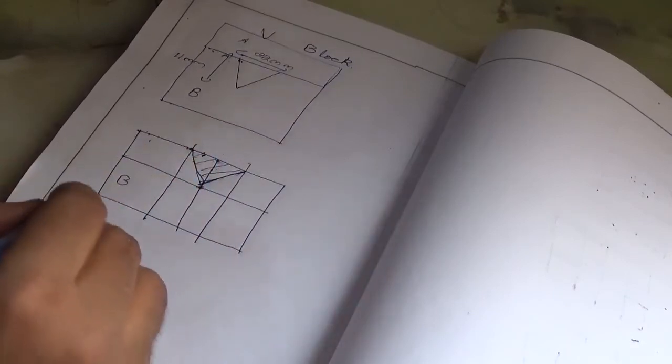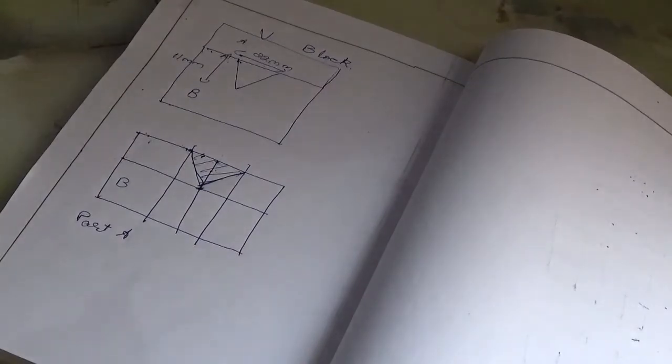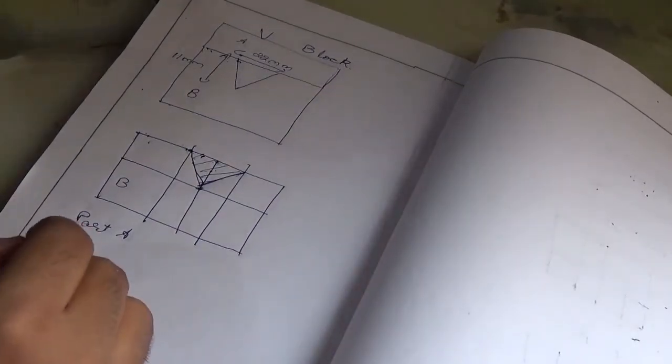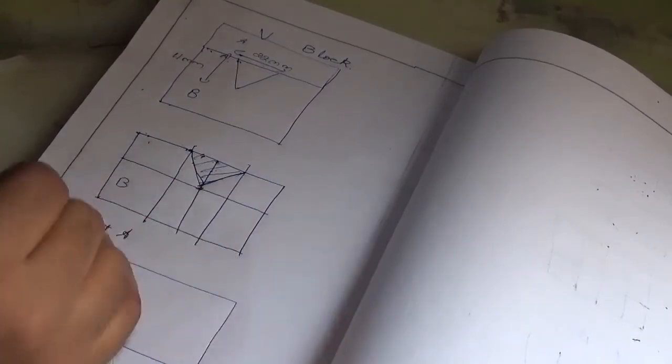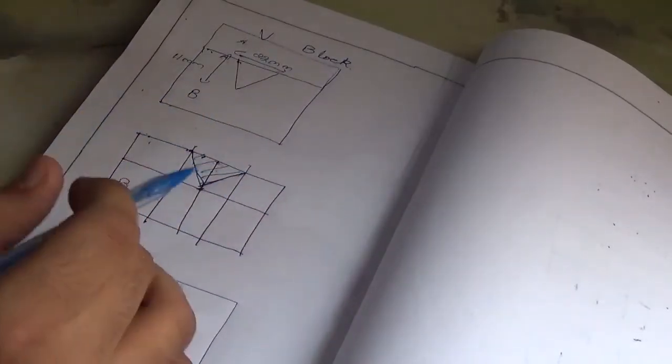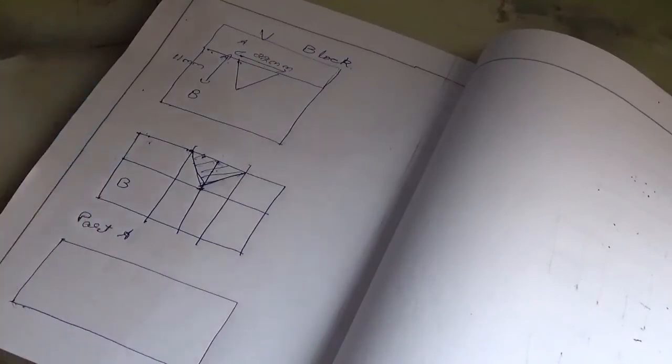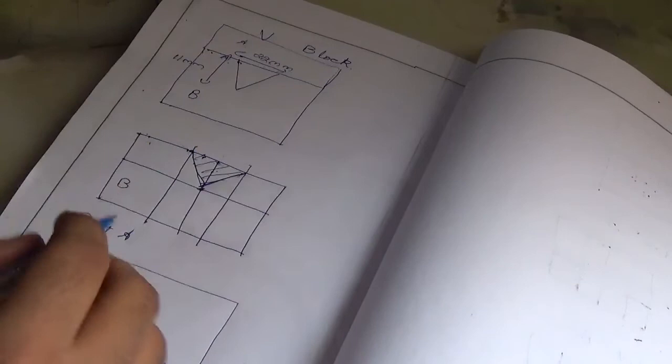Now moving on to part A, the workpiece would be like this. There are possibilities when only this part is asked to be made, and in the case of the square block also there may be possibilities that only the part B would be asked to make.